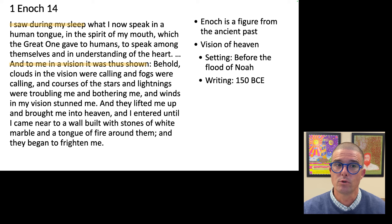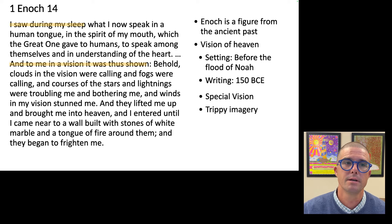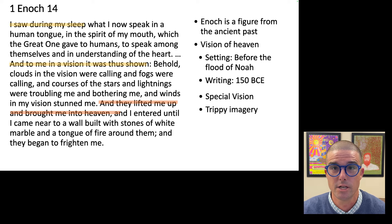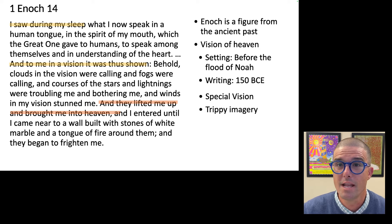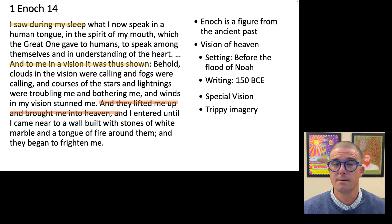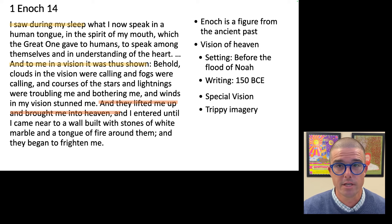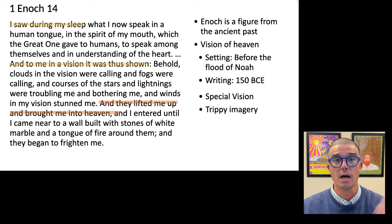In 1st Enoch 14, written around 150 BCE — close to the time of Daniel — Enoch reports what he saw during his sleep. But Enoch's vision here is not a bunch of different beasts. Instead, it's a vision of heaven. Enoch is taken up into heaven in his vision, and as the chapters of 1st Enoch progress, he's given a privileged view of the different levels of heaven and what's going on in them. By describing what heaven is like to Enoch in his vision, the audience also gets a peek into heaven. 1st Enoch is a good representation of the other main thing that happens in apocalypses — a figure from the ancient past is given a vision while being accompanied by an angel, and he goes up into heaven.